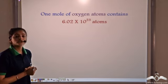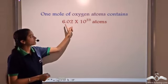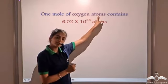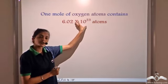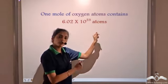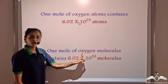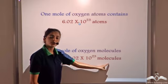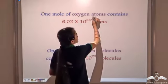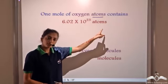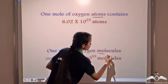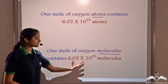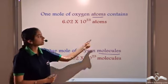If we say 1 mole of oxygen atoms, that means 1 mole of oxygen atoms contains 6.02 × 10²³ atoms. Here we are talking of atoms — that is 1 mole of atoms. When we talk of 1 mole of molecules, that contains 6.02 × 10²³ molecules. So 1 mole — that is this number — is just a number. It can be used to express both atoms and molecules.